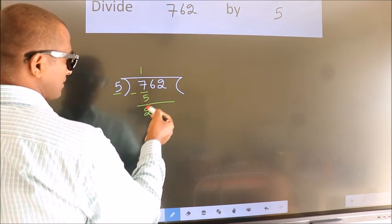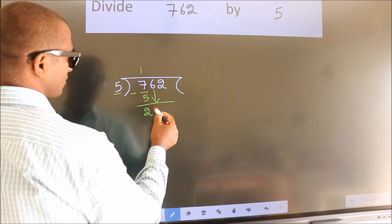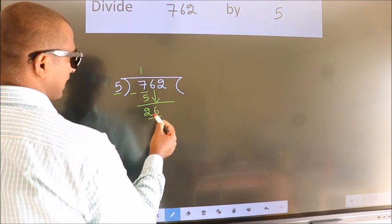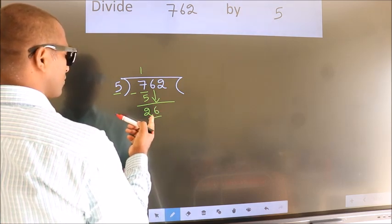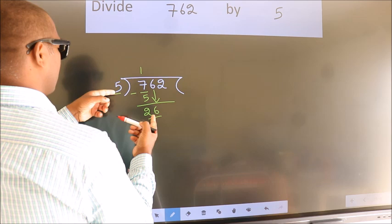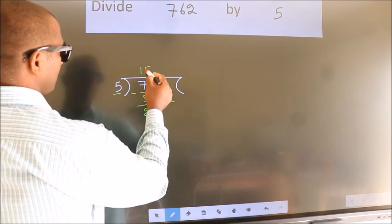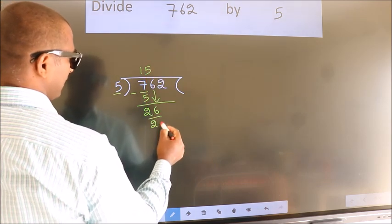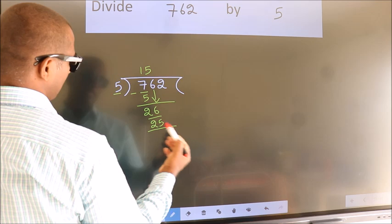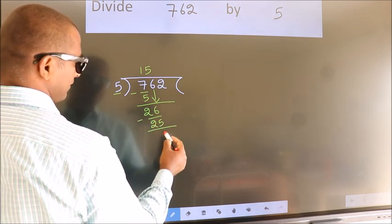After this, bring down the beside number. So, 6 down. So, 26. A number close to 26 in the 5 table is 5 fives 25. Now we subtract. We get 1.